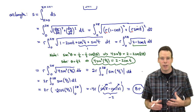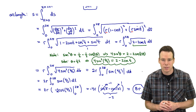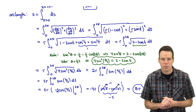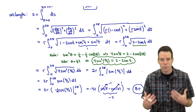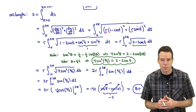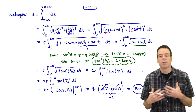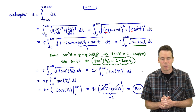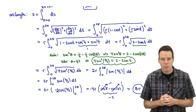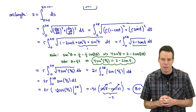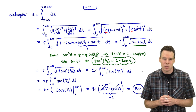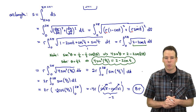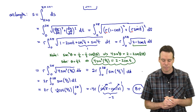The arc length of one arch of the cycloid is 8r — eight times the radius of the circle used to make that arch. In problems involving arc lengths and surface areas, because the arc length differential involves the square root of a sum of squares, some manipulation of the integrand is needed before computing the antiderivative.